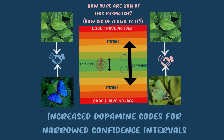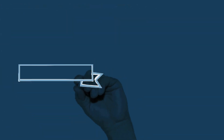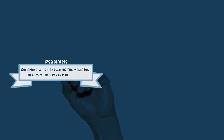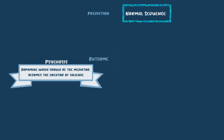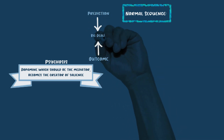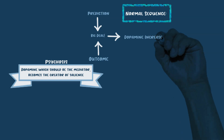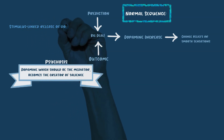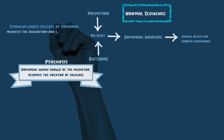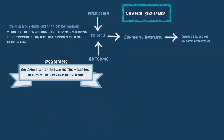Now that we have a better grasp of what dopamine actually is, we can understand psychosis much better. Psychosis occurs when dopamine, which should be acting as the mediator of salience, becomes the creator of salience. The proper sequence is: the brain detects something salient, dopamine increases correspondingly, and we respond appropriately — this is stimulus-linked release of dopamine, where salience is contextually driven.